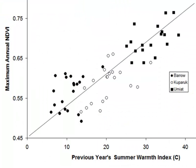Here's an example where we're looking at climate stations in the Arctic: Barrow, Kaparek, and Umayyat. We see the same relationship — we have a buffer around each climate station. The coldest climate station is Barrow, and it consistently has the lower maximum summer NDVI. The warmest climate station, Umayyat, consistently has the highest summer NDVI.